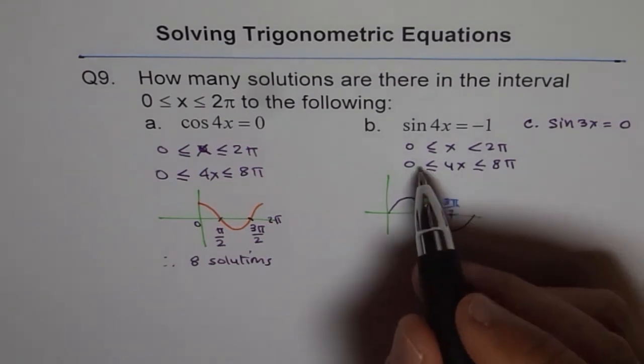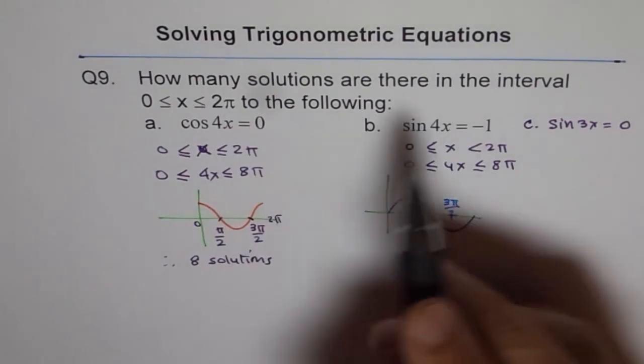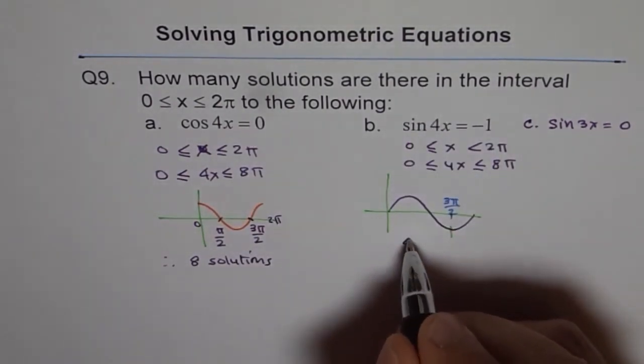So 4 cycles of this. Therefore, in a domain of 0 to 2π, we have only one solution. But in this domain, 0 to 2π, for sin 4x minus 1, we actually have 4 solutions.